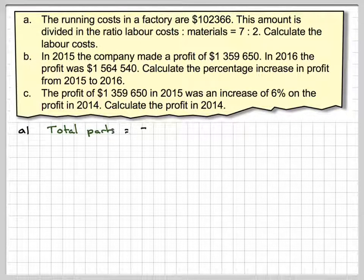So, the total number of parts will be 7 plus 2, because that's the number of parts altogether, because of the ratio, which is 9 parts.